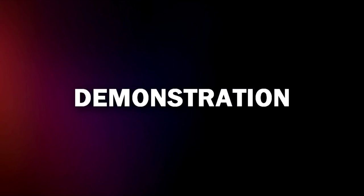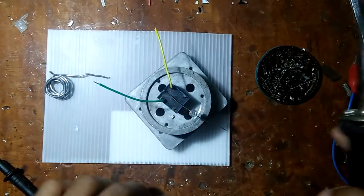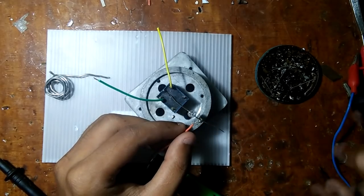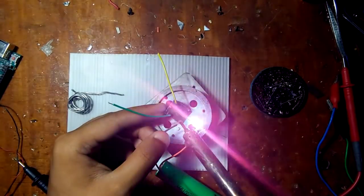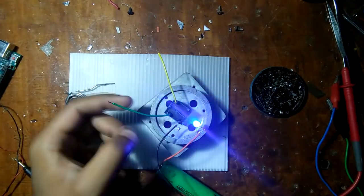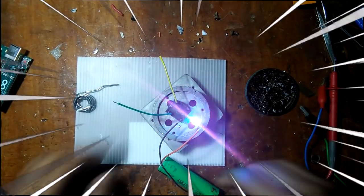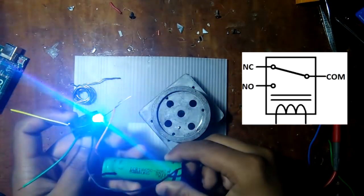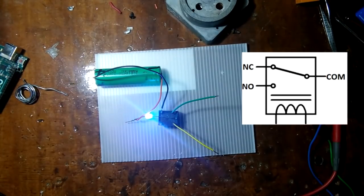Let me do a little demonstration. I have connected the negative end of an LED with the common terminal and the negative terminal of the battery is connected to the normally closed terminal. And as you can see the LED is glowing because the switch is off right now and the common NC points are conducting electricity.